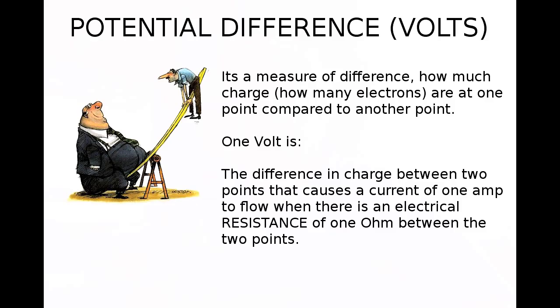Electrons want to be distributed uniformly throughout the circuit, and if they're not, this gives rise to what we call potential difference or voltage. Voltage is a measure of the difference — how much charge or how many electrons are at one point compared to any other point. One volt is the difference in charge between two points that causes a current of one amp to flow when there is a resistance of one ohm between them. So if you've got a difference of voltage — say 1.2 volts here and 0.8 volts there — current wants to flow to make everything even.